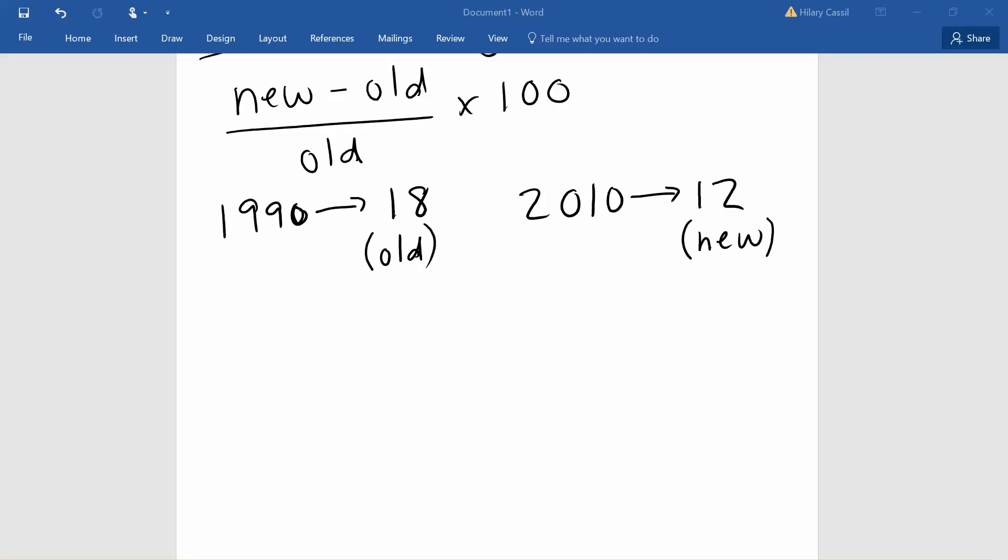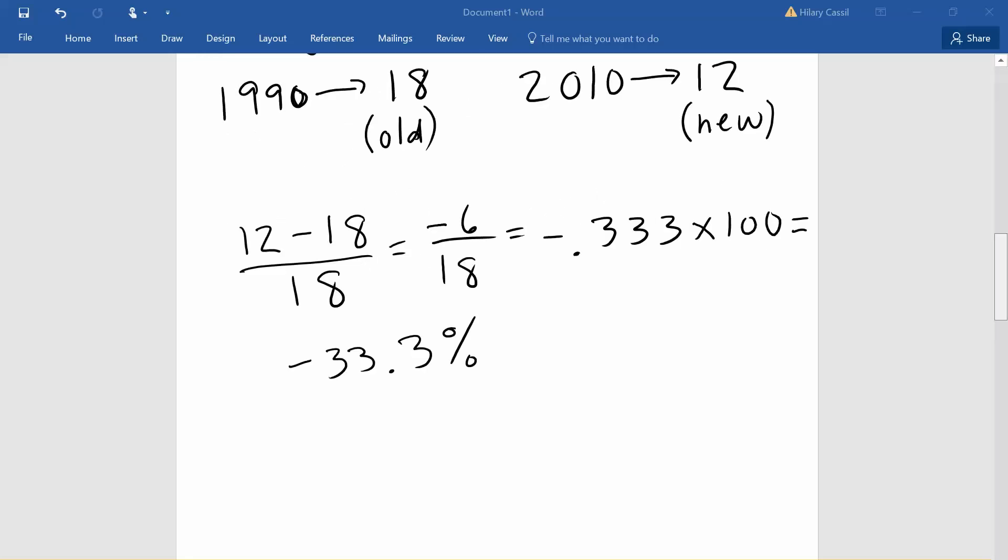Recall that in 1990 we had 18 albino alligators, this is going to be our old, our original value. In 2010 we had 12 albino alligators so this is going to be our new value. Once we plug it into the formula it should look like this. We will get negative 6 divided by 18 which gives us negative 0.3 repeating. Once we multiply by 100 we can see we have negative 33.3 percent.